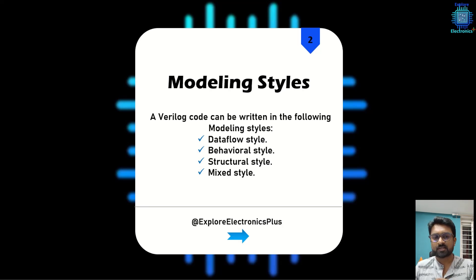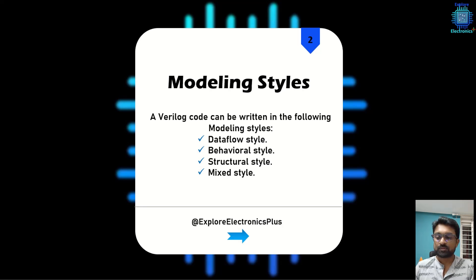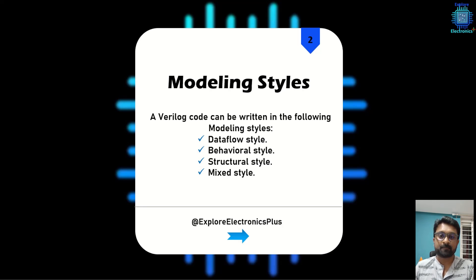Then we have structural style. For example, a full adder design may be designed using two half adders if the half adder is already available. The structure of the half adder can be used in the design of the full adder, making it a sub-component. This kind of usage in Verilog code is called structural style. We can also mix these three styles while designing.